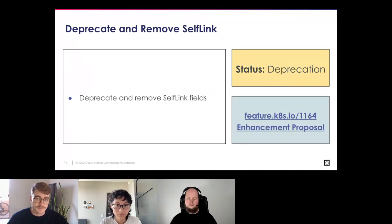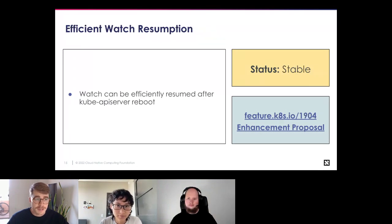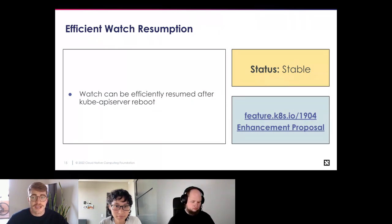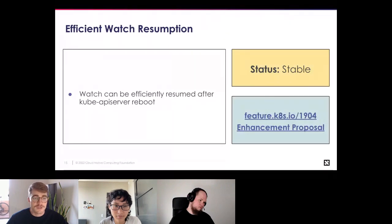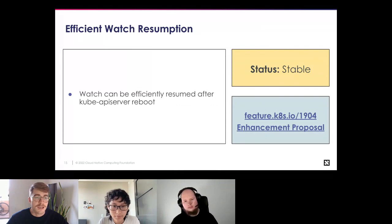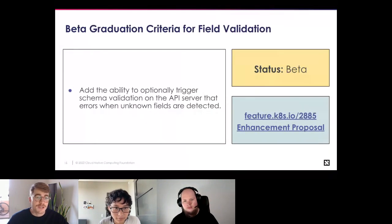Efficient watch resumption is a feature graduating to stable. The kube-apiserver watch cache is initiated from etcd with an empty change history on start, meaning clients resuming a watch after an API server reboot almost always have a resource version outside the history window. This feature ensures that watch can be efficiently resumed after the API server is rebooted.